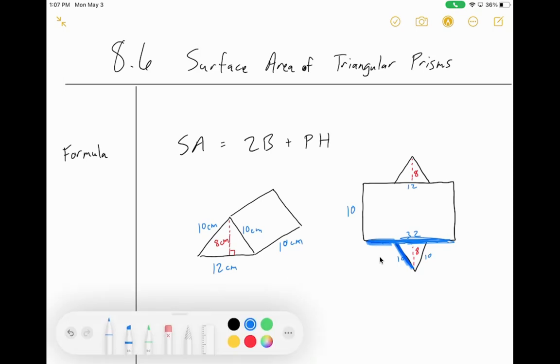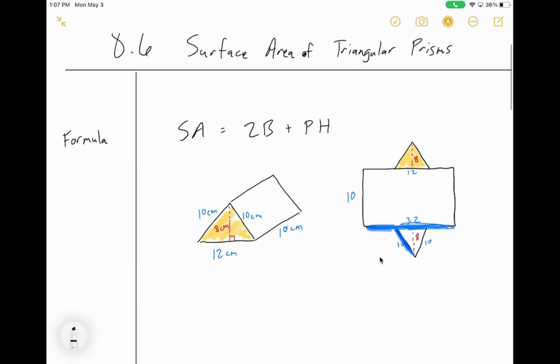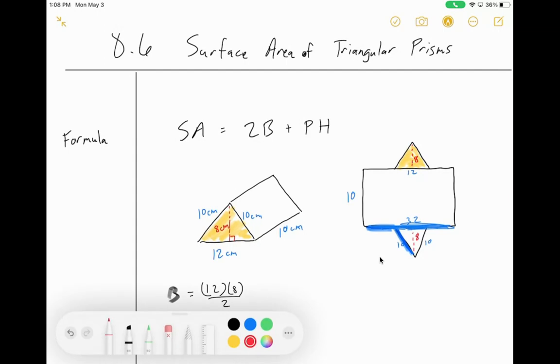First of all, let's start with the bases. The base is a triangle, this part I'll highlight in yellow. In that case, the base area, big B I call it, is equal to 12 times 8 divided by 2, because a triangle is half of a rectangle. We've said that a lot, right? So then calculate 12 times 8 divided by 2, which is 48.